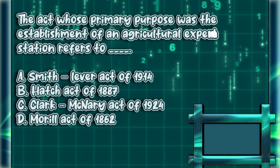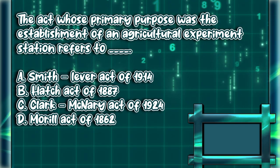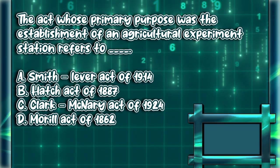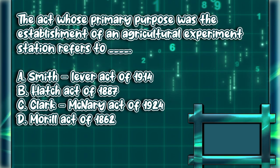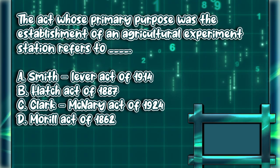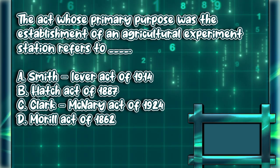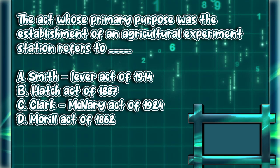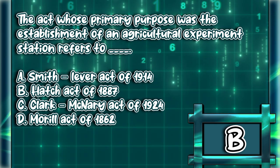The act whose primary purpose was the establishment of an agricultural experiment station refers to. A. Smith-Lever Act of 1914. B. Hatch Act of 1887. C. Clark-McNary Act of 1924. D. Morrill Act of 1862. The answer is letter B.